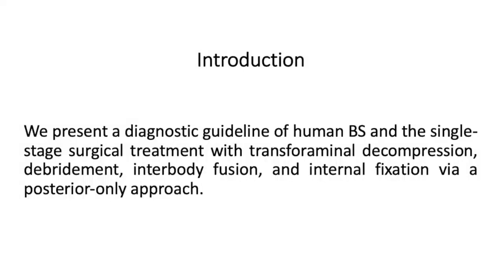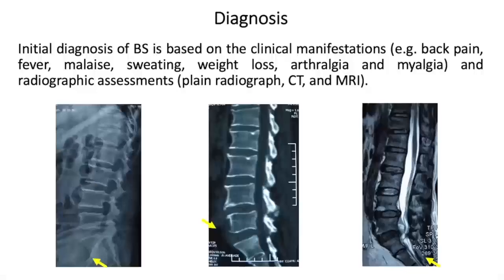The initial diagnosis of brucellar spondylodiscitis is based on clinical manifestations and radiographic assessments. The clinical signs and symptoms mainly include back pain, fever, malaise, sweating, weight loss, arthralgia, and myalgias.